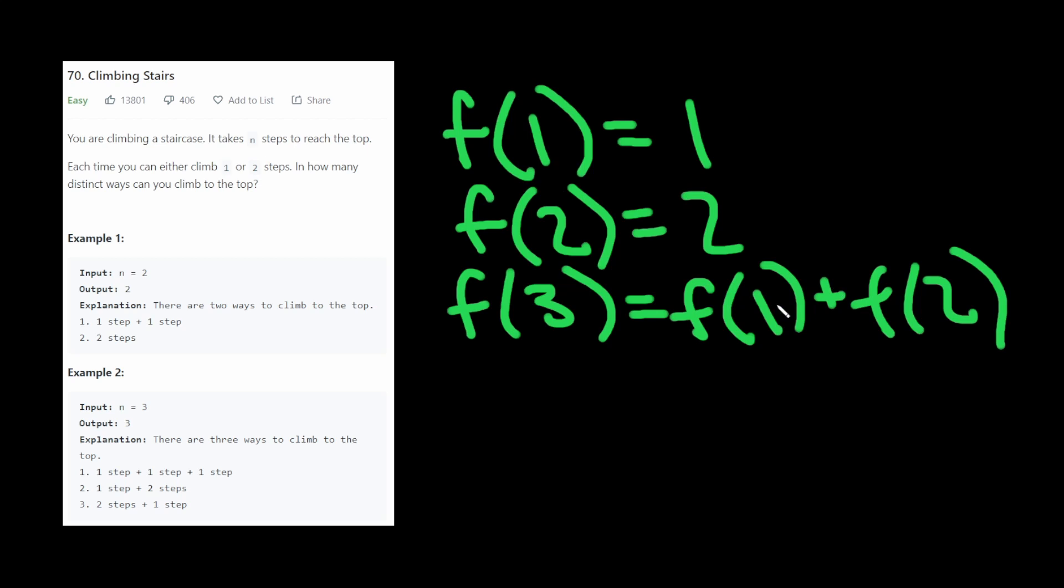So instead of having a recursive call, we can just have a variable called steps. And it could be an array. And each position in the array represents the step and each value at each position represents the amount of distinct way you can reach the top. So initially, it would be one and two.